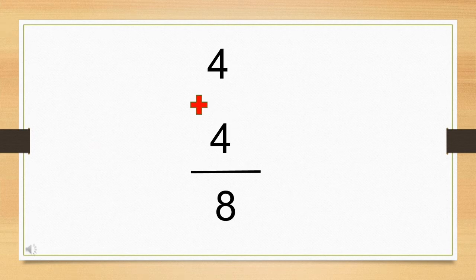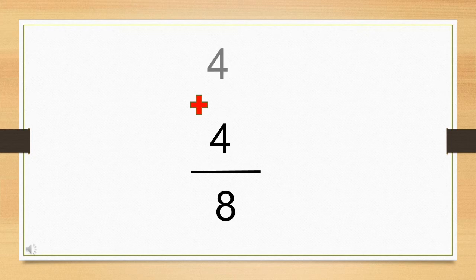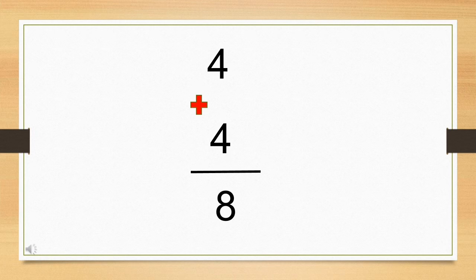Here number four is given on the top, then plus sign is given and again number four is given. Both the numbers are of the same value. Both the numbers are same. So we will keep one number in our mind and one on our finger. Four we will keep in our mind and four we are going to keep on our fingers. Please count what comes after four. Five, six, seven and eight. What will be the answer? Number eight. Very good.